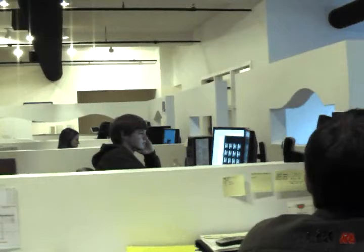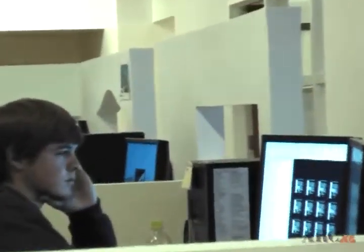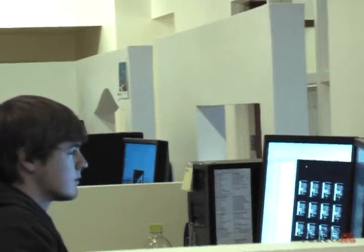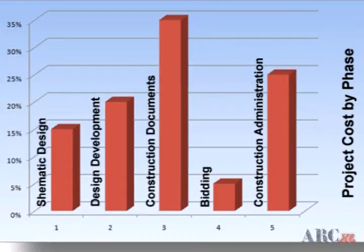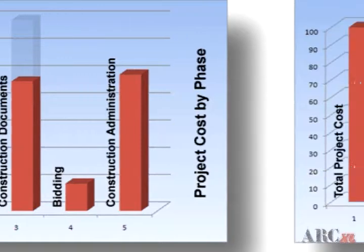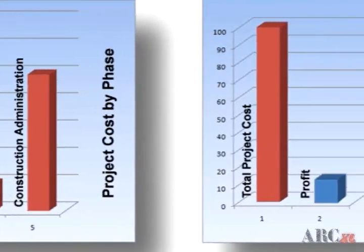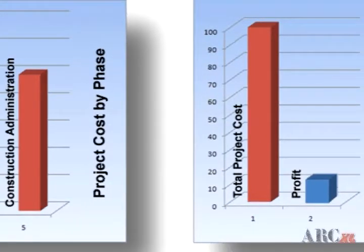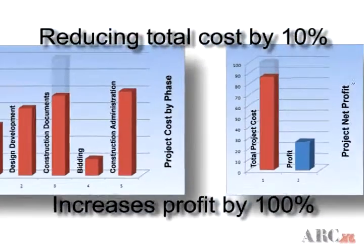While Archexcel details have always made architects more productive and profitable, having free access to our library further eliminates any perceived cost barrier that may have been associated with the use of these details. We estimate that the cost of producing construction details for use in Revit-based projects normally accounts for 15% of total architectural project production cost. Reducing this figure to 5% effectively doubles standard project profit margins.